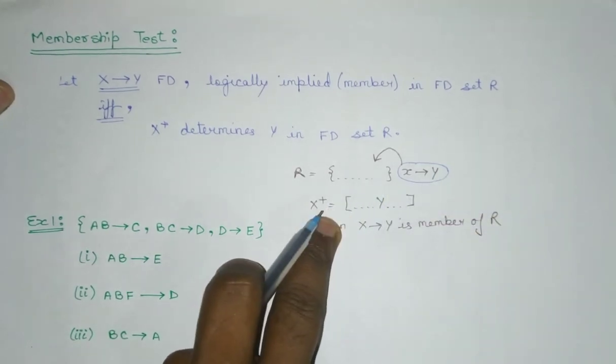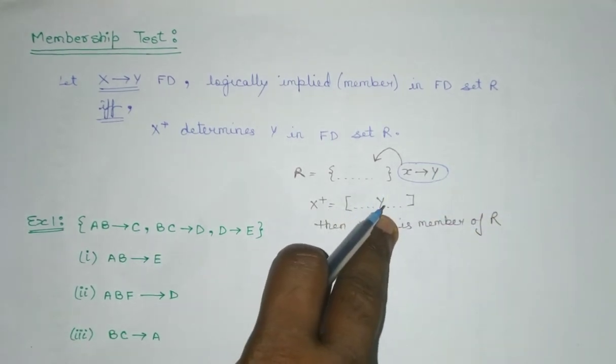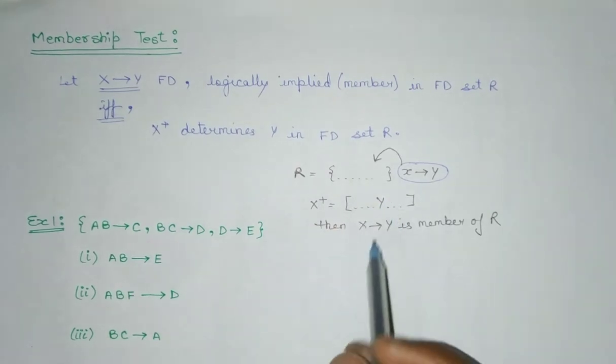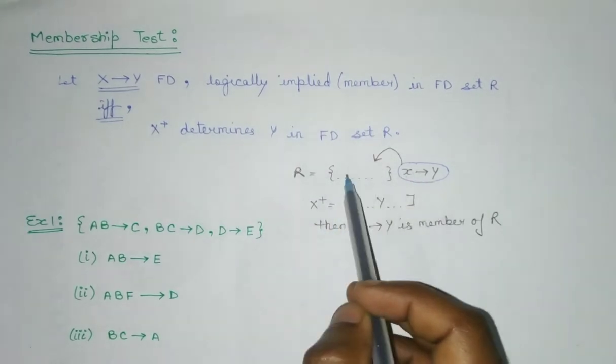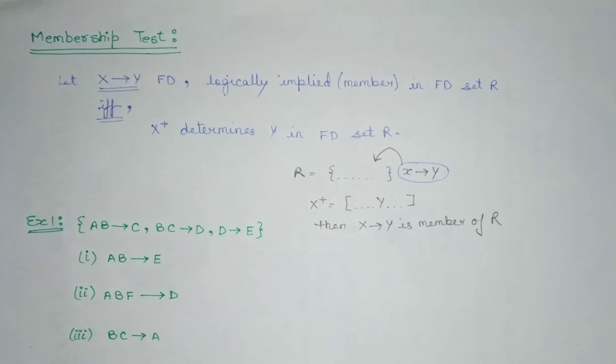We need to check whether this functional dependency belongs to this particular set or not. So if the closure of X is giving us Y, then we can confirm that this functional dependency belongs to this particular relation, otherwise it does not belong to that particular relation. How? Let's understand this with help of this example.